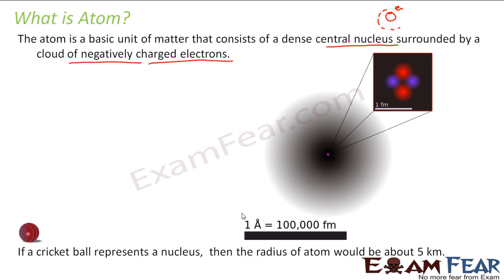Atom is that small. For example, if we assume that a cricket ball represents a nucleus, then the radius of the atom would be about 5 kilometers. So you know how much 5 kilometers is — it is quite a long distance. You can imagine why this analogy is used: just to show how small the nucleus is when compared to the size of the atom. If this ball is your nucleus, then the radius of the atom is 5 kilometers.